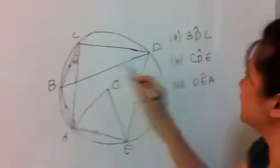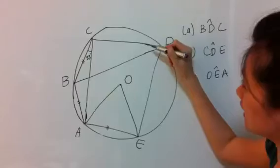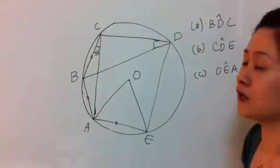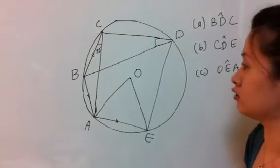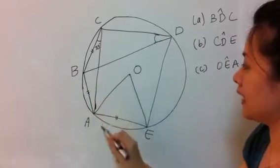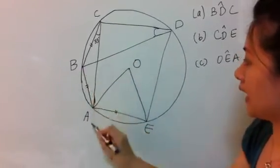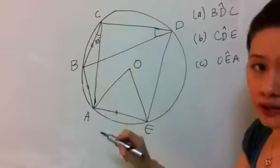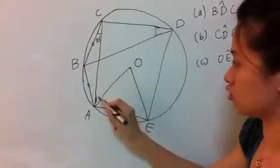So, the first part is to solve BDC, which is this angle. Okay, so the first thing I would like to do is I will find BAC, which is pretty easy. BA and BC are equal chords, so it's actually an isosceles triangle.